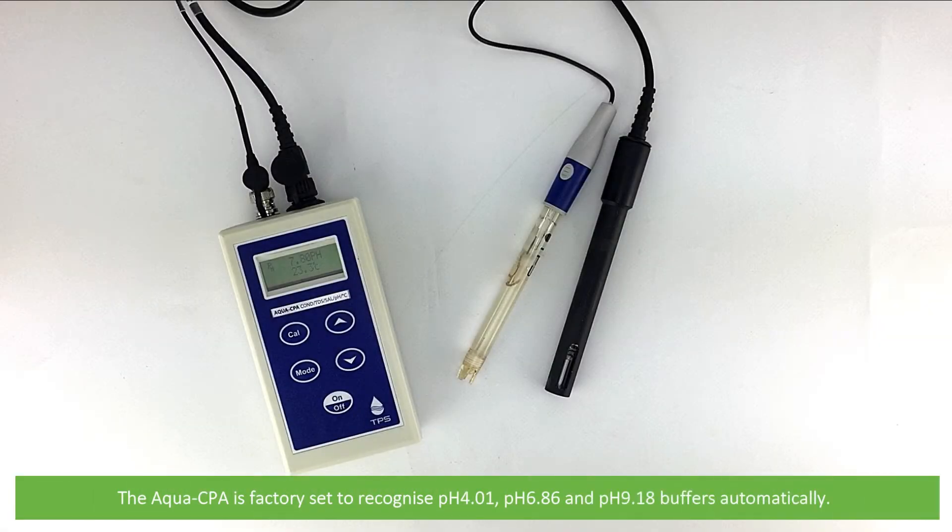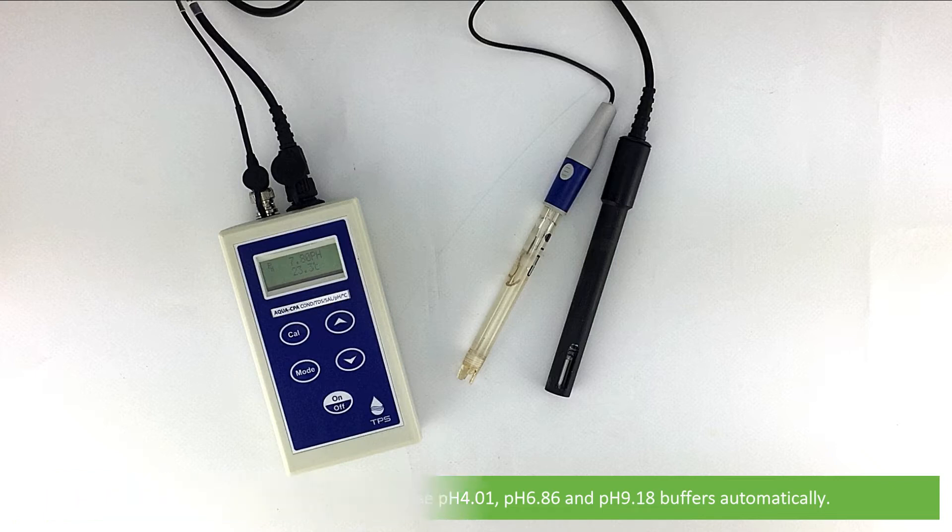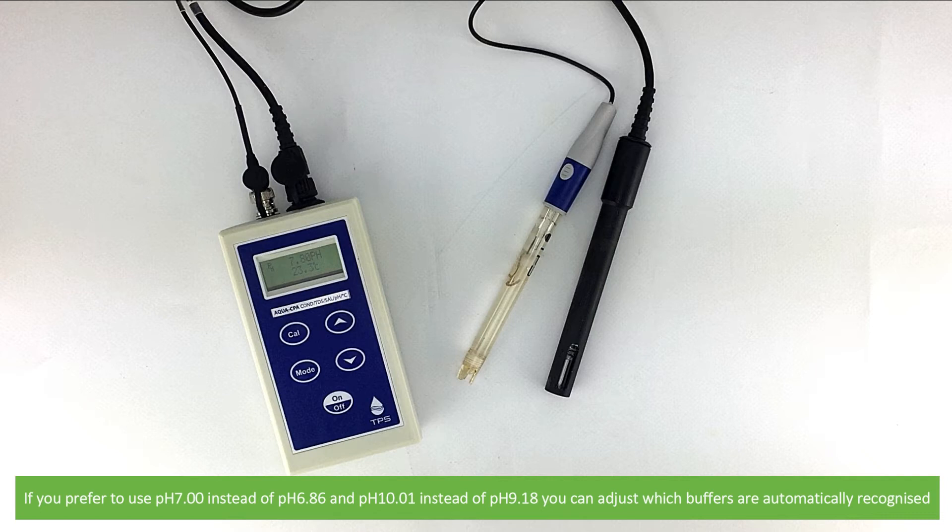The Aqua CPA is factory set to recognize pH 4.01, pH 6.86 and pH 9.18 buffers automatically. If you prefer to use pH 7 instead of pH 6.86 and pH 10.01 instead of pH 9.18, you can adjust which buffers are automatically recognized.